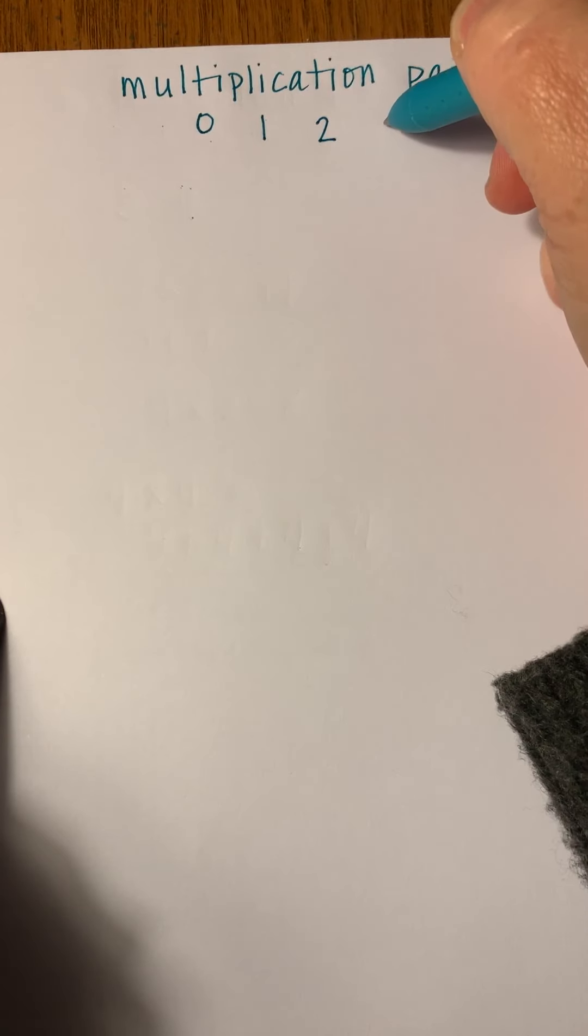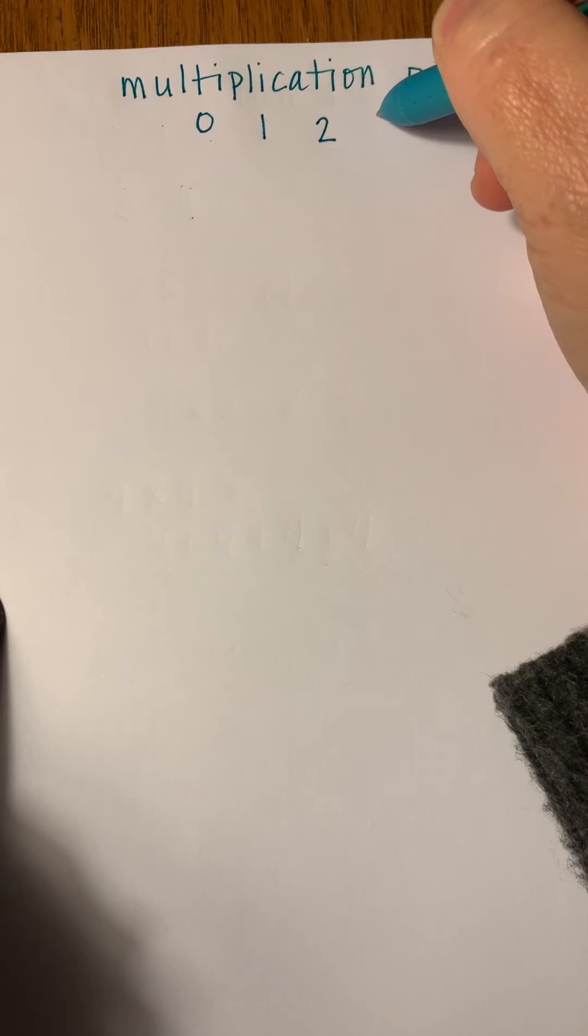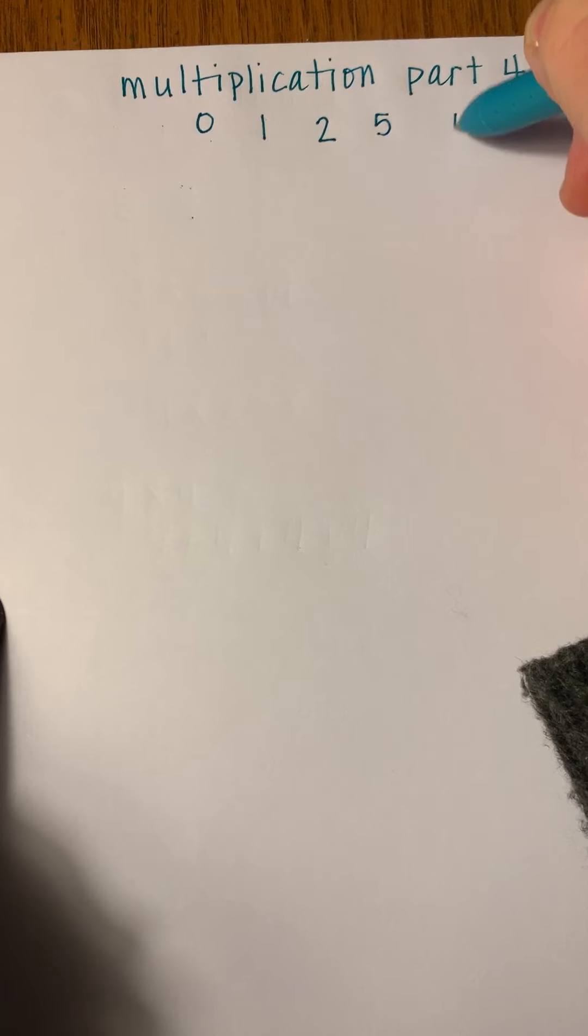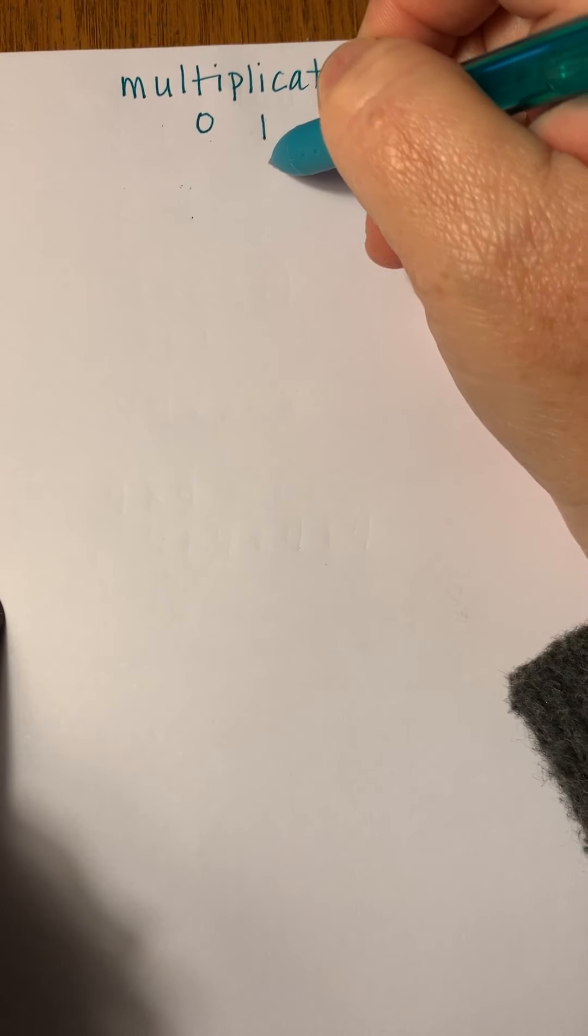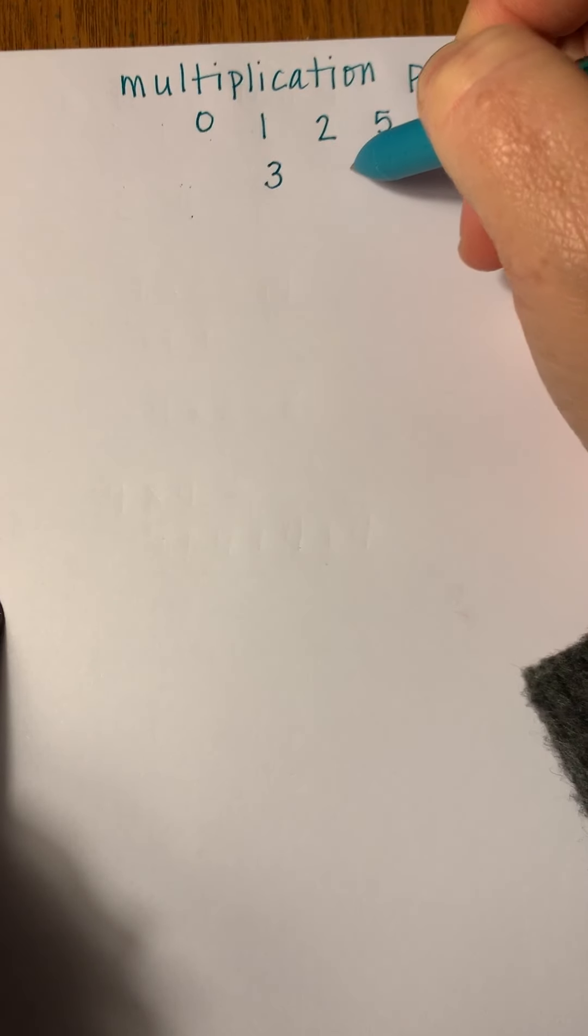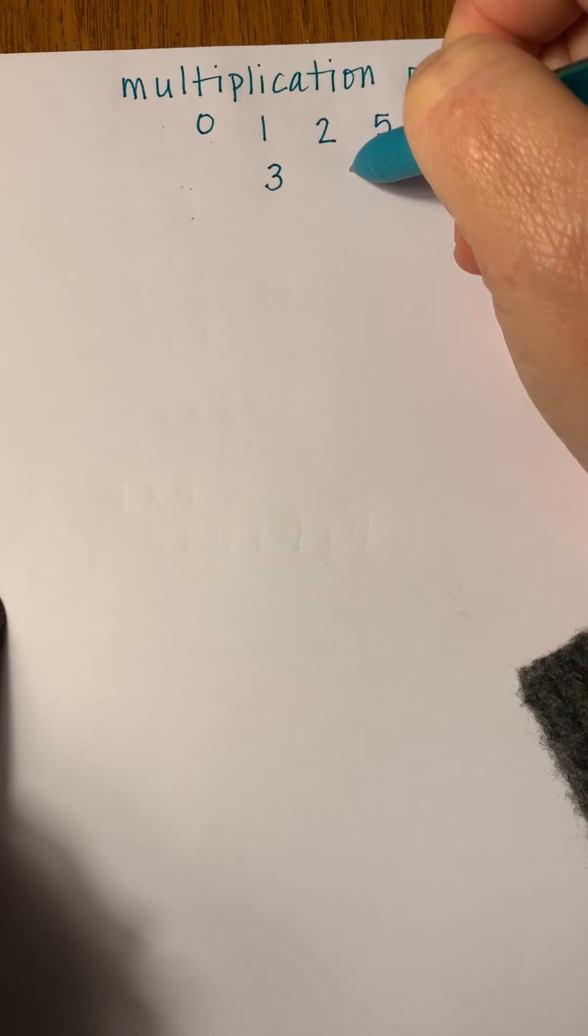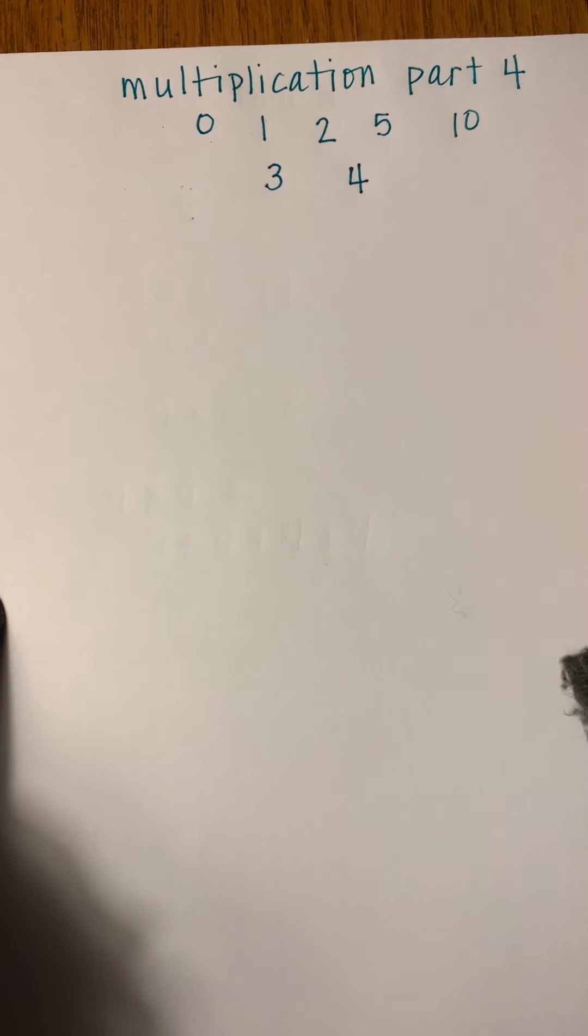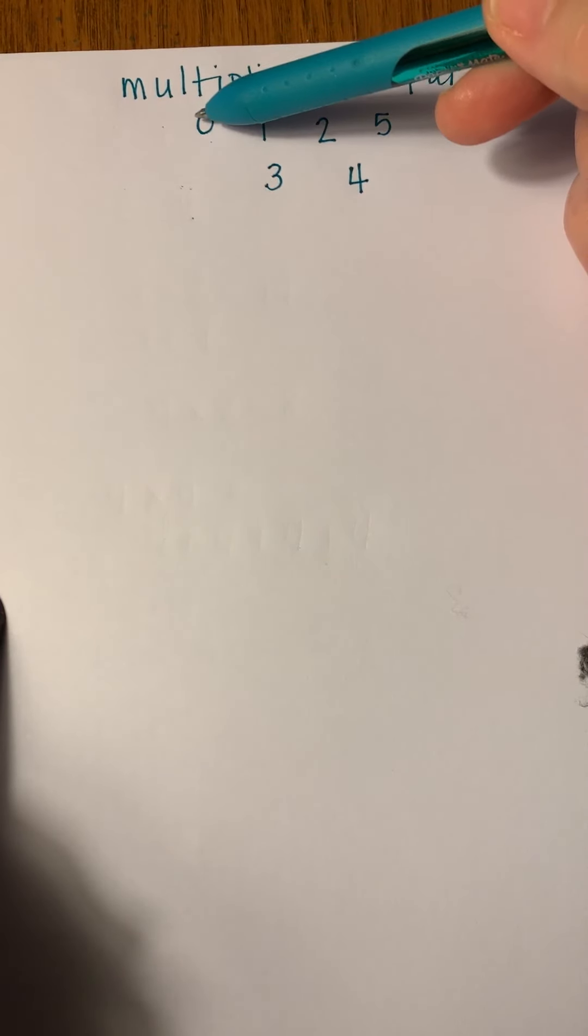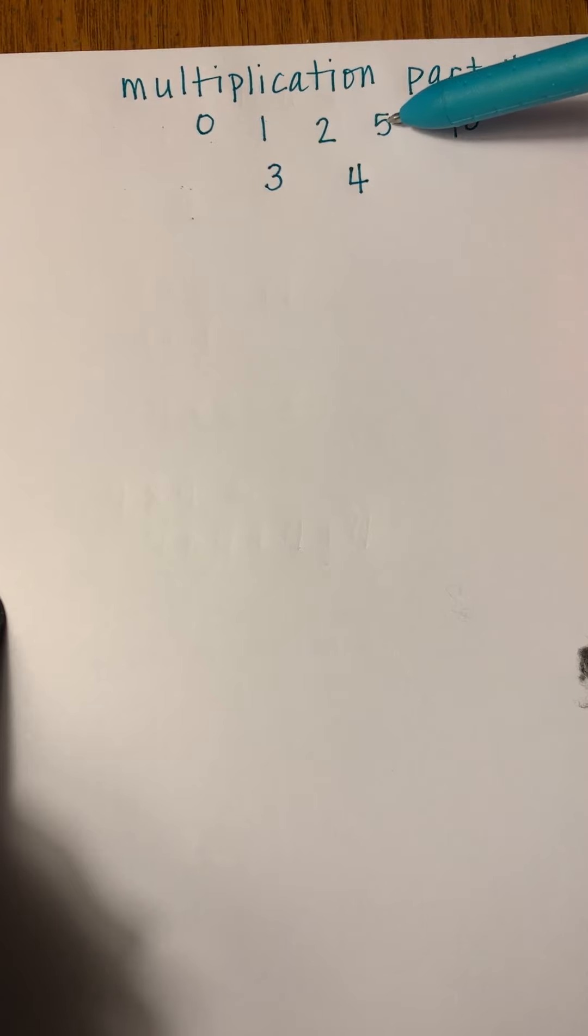We covered 2, 5, and 10 in the first videos. Today I want to show you how to multiply by 3 and also by 4. Then we'll have learned 0 all the way through 5, and also including 10.